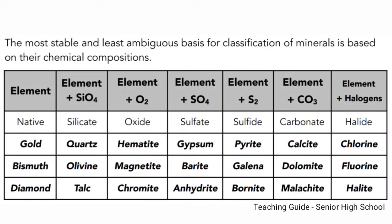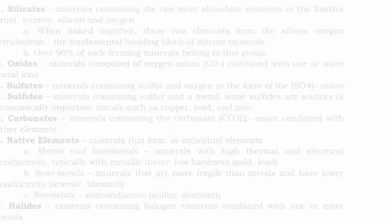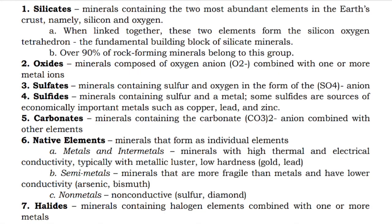The most stable and least ambiguous basis for classification of minerals is based on their chemical compositions. Silicate, for example, is a mineral containing the two most abundant elements in the earth's crust — namely silicon and oxygen. Over 90% of rock-forming minerals belong to this group. We also have oxides, sulfates, sulfides, carbonates, native elements, and halides.